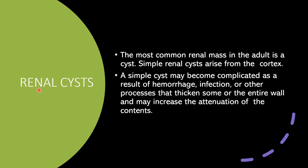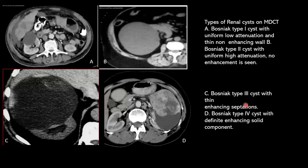Coming to renal cysts — the most common renal mass in adults. Simple renal cysts arise from the cortex and may become complicated as a result of hemorrhage, infection, or other processes that thicken some or the entire wall and may increase the attenuation of the contents. According to Bosniak, cysts are classified into 4 types: Type 1, 2, 3, and 4.